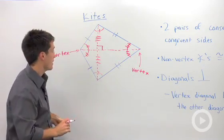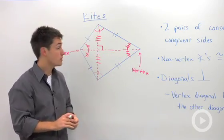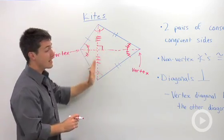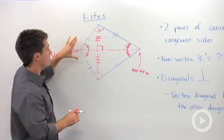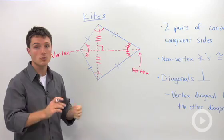So a lot going on in a kite. We've got diagonals that are perpendicular to each other, this diagonal was bisected, the angles in the vertex are bisected, and we've got two pairs of consecutive congruent sides.